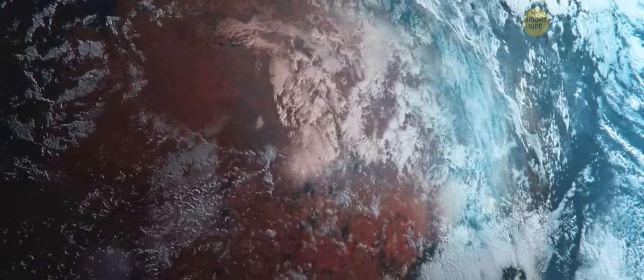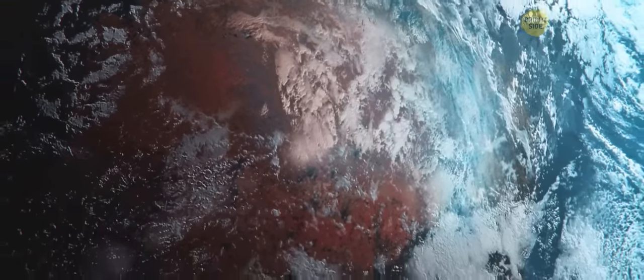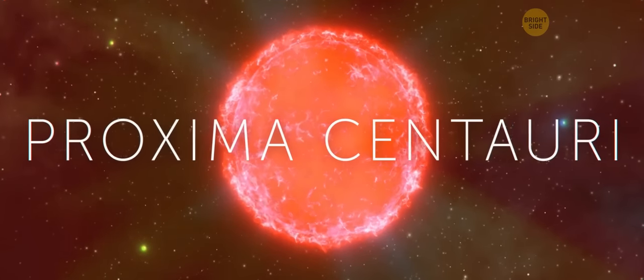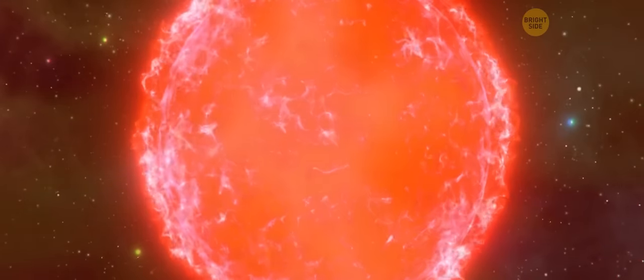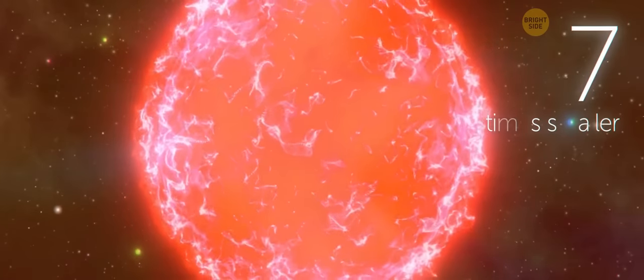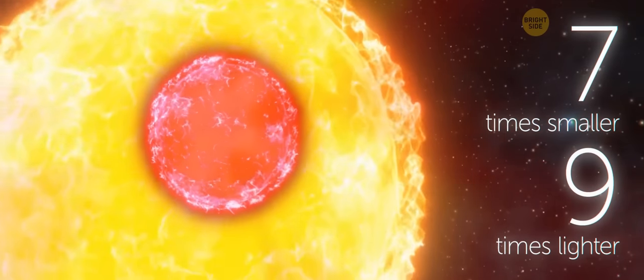Okay, let's let our planet cool down a bit and put Proxima Centauri in the center of our solar system. It's not a red giant, but a red dwarf. This star is almost seven times smaller than the sun, and almost nine times lighter.